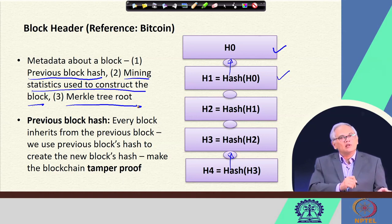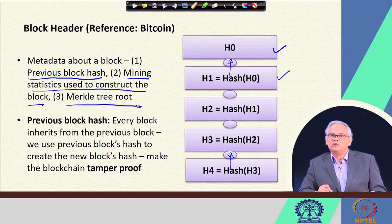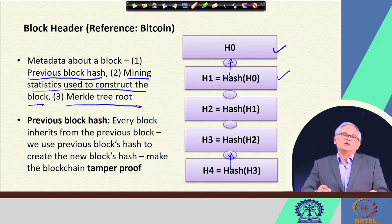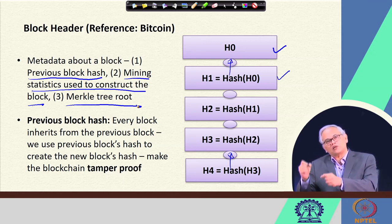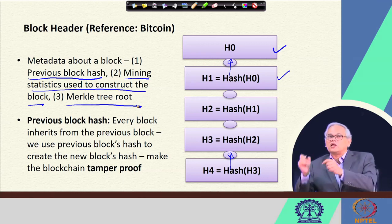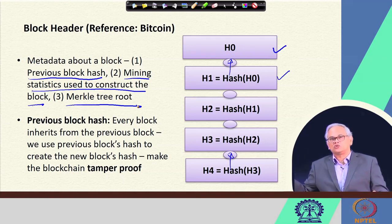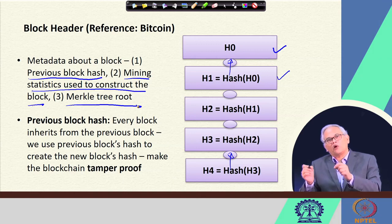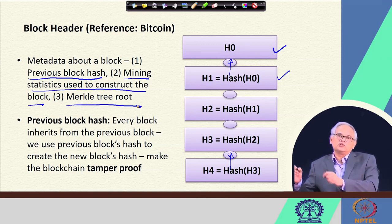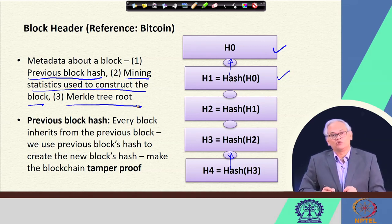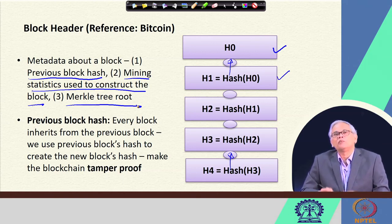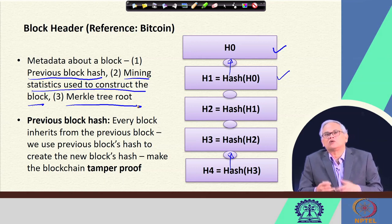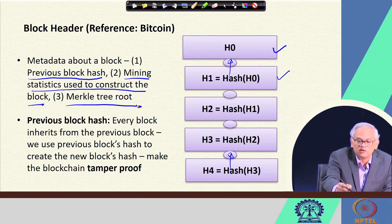Changing any transaction changes the Merkle tree root hash, which affects the block hash of that block, which in turn affects the next block's hash, and so on from block 600,000 all the way up to 700,000. Each recomputation is computationally very challenging due to the leading-zeros requirement on block hashes. Unless the adversary has enormous computing power — which is assumed they cannot have — this makes the blockchain tamper-proof.